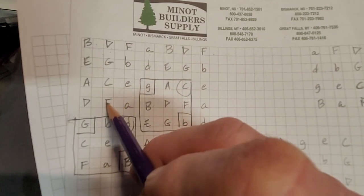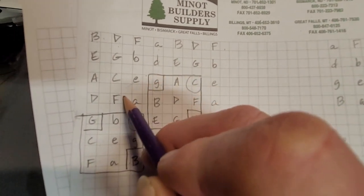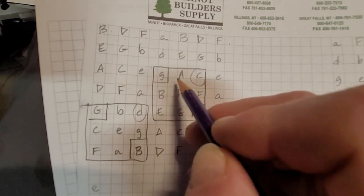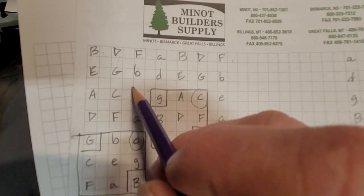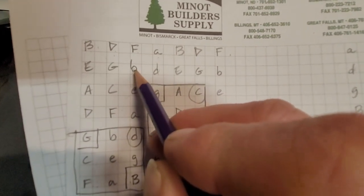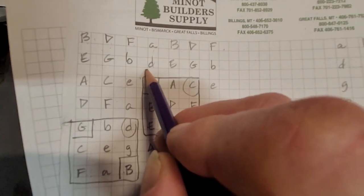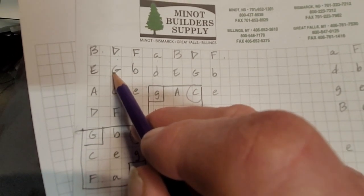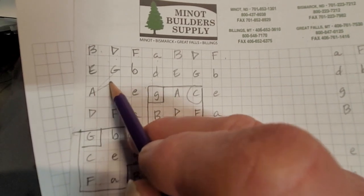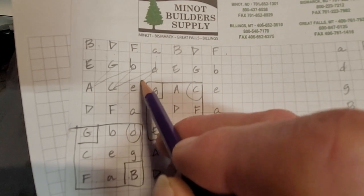So what we also have is we know that if we come this way we get whole steps: D flat, E flat, F, G, A, B, D flat, E, F. So that's coming from here to here. What if we go here to here? That's our half step. So we're gonna do a whole step, a half step, a whole step, a half step, a whole step, a half step, whole, and so on.